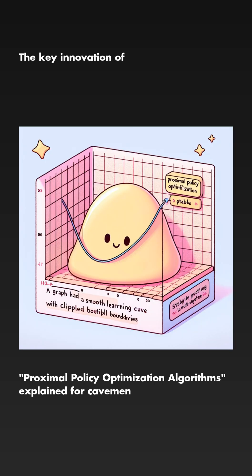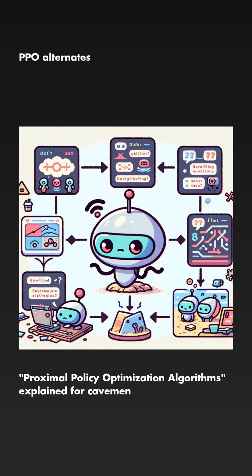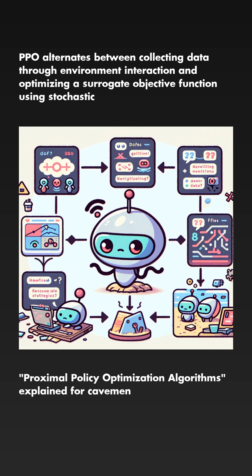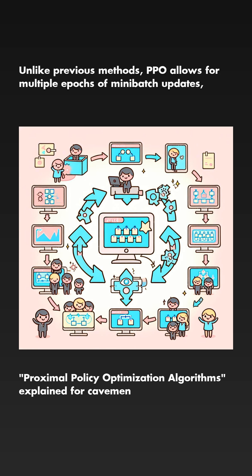The key innovation of PPO is its clipped surrogate objective, which prevents excessive policy updates and ensures stable learning. PPO alternates between collecting data through environment interaction and optimizing a surrogate objective function using stochastic gradient ascent. Unlike previous methods, PPO allows for multiple epochs of mini-batch updates, improving sample efficiency.